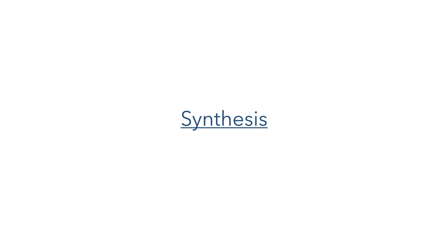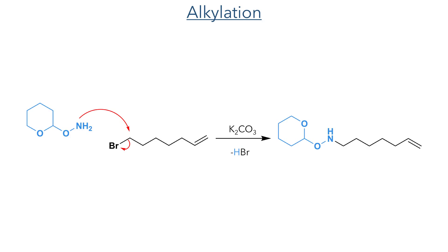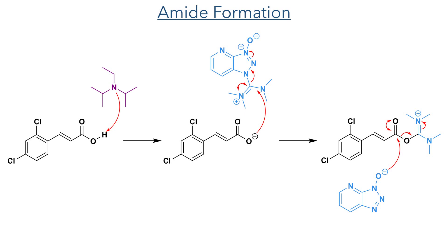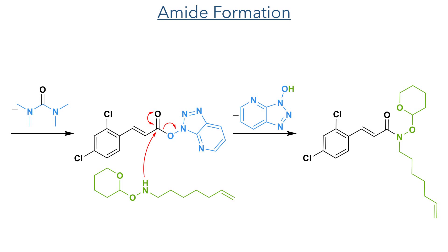Let's now look at the synthesis of one of these compounds. The synthesis started with the alkylation of a tetrahydropyran-protected hydroxylamine, which installed the carbon linker with an alkene at the end that can be transformed into the desired electrophile. To couple this with DCHA, they used peptide coupling methodology with HATU as the coupling reagent. The acid is first deprotonated by Hünig's base, then attacks HATU to form an isouronium salt, which is displaced by the hydroxyazobenzotriazole, eliminating tetramethylurea. This activated ester is then attacked by the amine to complete formation of the amide bond.